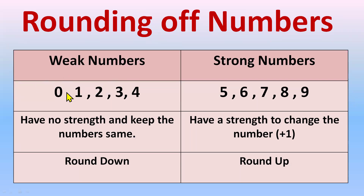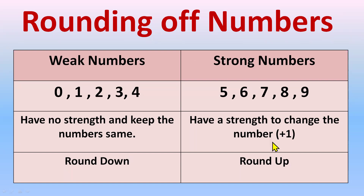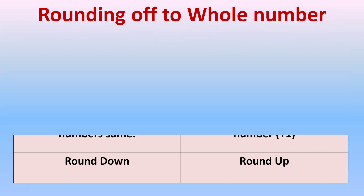When rounding decimal numbers, there are weak numbers and strong numbers. Weak numbers are zero, one, two, three, and four. Strong numbers are five, six, seven, eight, and nine. A weak number means it has no strength, so you keep the number the same. A strong number has strength to change the number, so you add one — weak numbers round down, strong numbers round up.